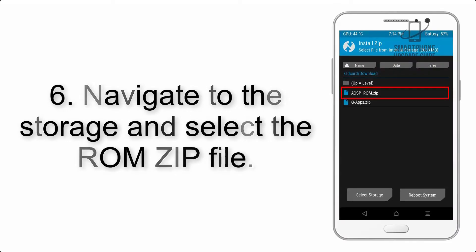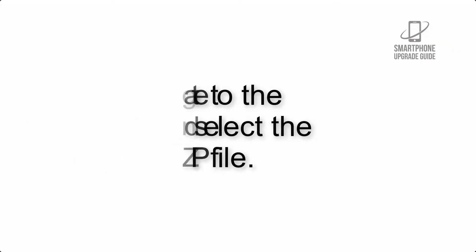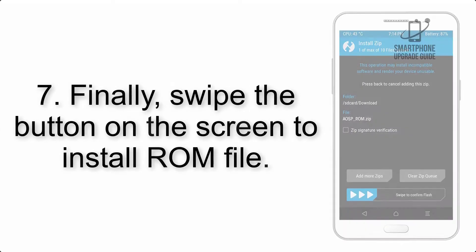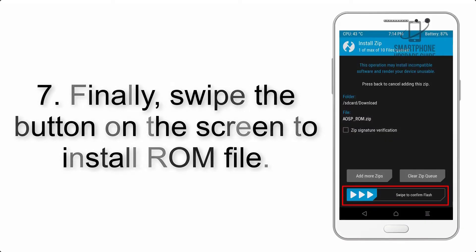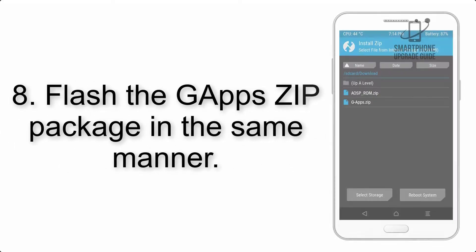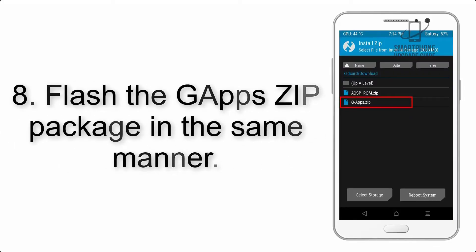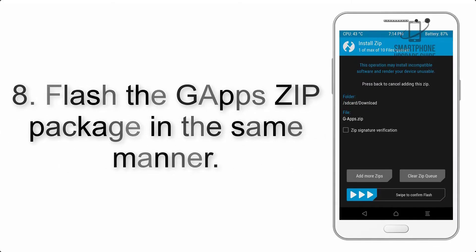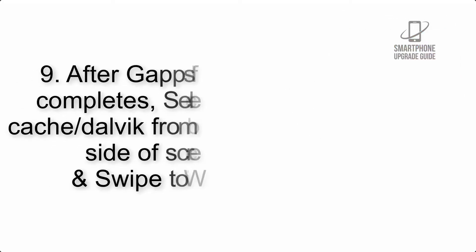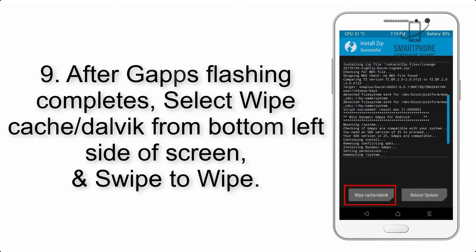Step 6: Navigate to the storage and select the ROM zip file. Step 7: Finally, swipe the button on the screen to install the ROM file. Step 8: Flash the GApps zip package in the same manner.